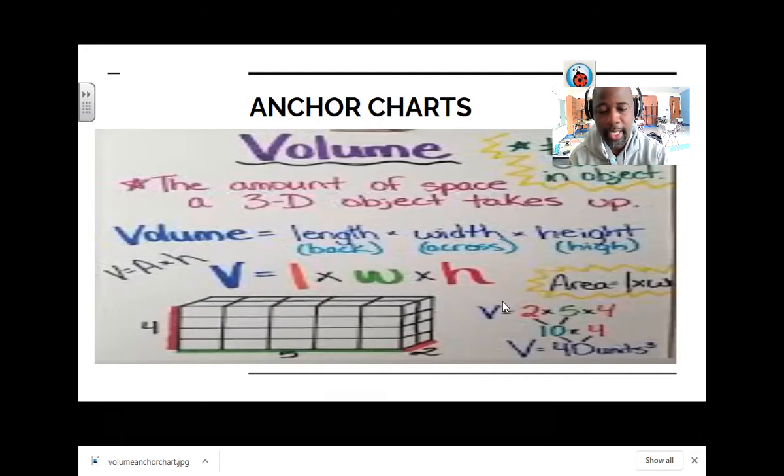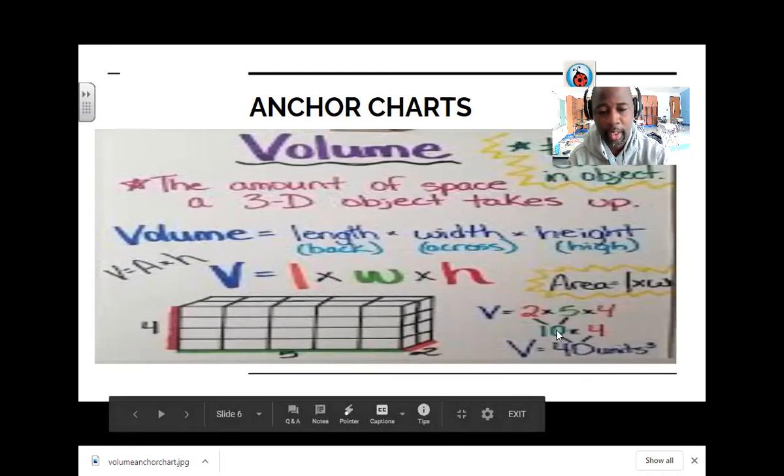So volume equals your length times your width times your height. So we got 2, 5, and 4. 2 times 5 is 10, and then 10 times 4 is 40. So this one is 40 units cubed. You see how they have that 3 right here at the end of the units? If that 3 is not there, your answer is incorrect. So since we're measuring 3 sides, the length, the width, and the height, let's make sure that 3 is at the end of our units, so we know that we're calculating the volume and not anything else.